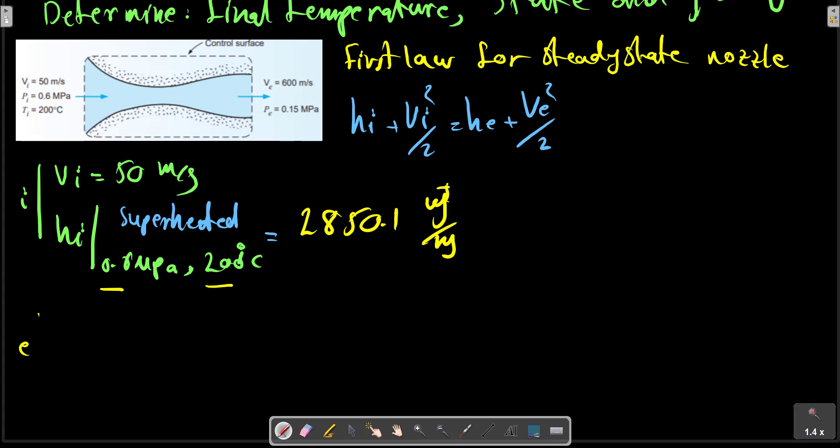For the exit situation, we have P_e and h_e. We don't have any information because we have only temperature and pressure. But we can substitute into this relation. h_e can be calculated as h_i plus...